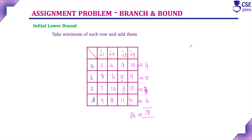This initial lower bound value of 18 will be added to the state space tree. We know the assignment problem is solved using branch and bound by constructing the state space tree. In the initial stage of the state space tree, the lower bound value is 18, and this is considered as level 0.